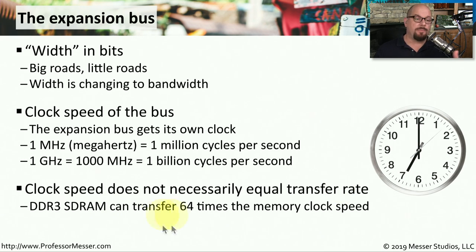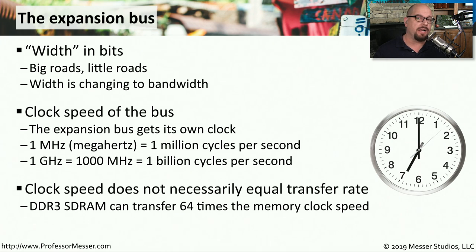For example, a DDR3 memory module can transfer 64 times the amount of data than its stated memory clock speed. Fortunately, expansion buses are very standardized — you won't have to worry about the clock speeds of these expansion buses. Instead, you can look at the size and type of the interface to know exactly what bandwidths will be available.